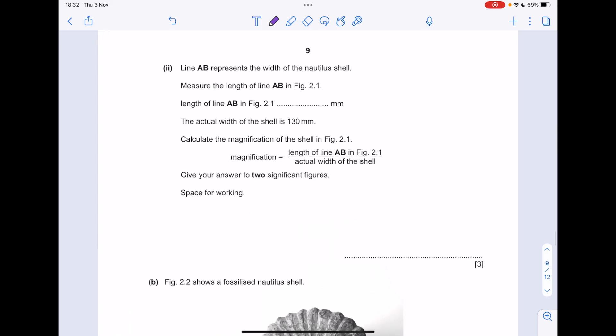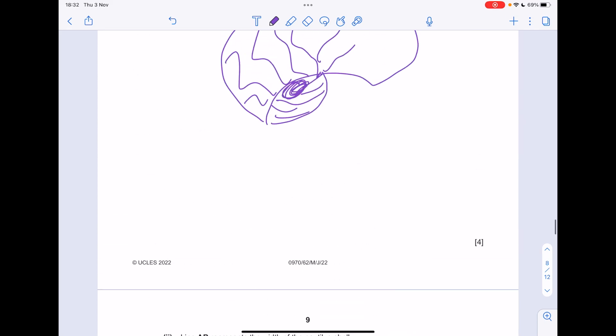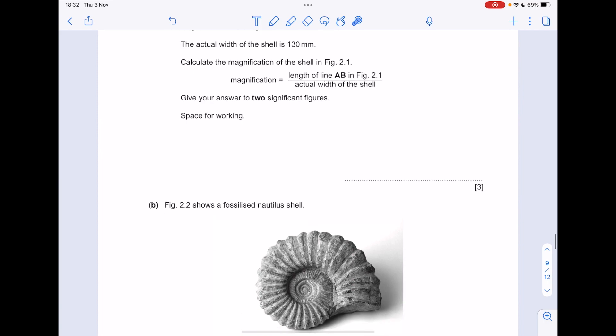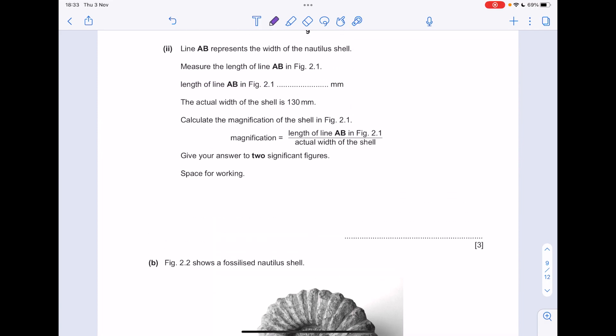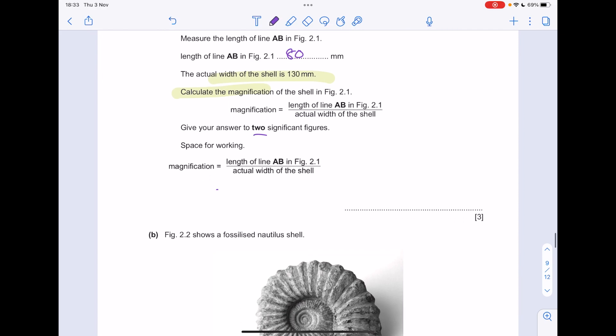Line AB represents the width of the nautilus shell. Measure the length of line AB accurately with your ruler. You should find that it's 80 millimeters. The actual width of the shell is 130 millimeters. Calculate the magnification using this equation. Remember, we have to give our answer to 2 significant figures. So the length of the line was 80, the actual width of the shell we've been told is 130. Pop that into your calculator and you get a value of 0.62 to 2 significant figures.